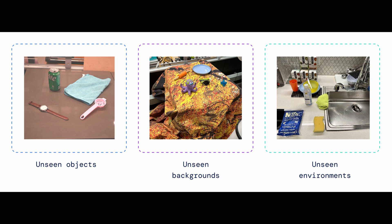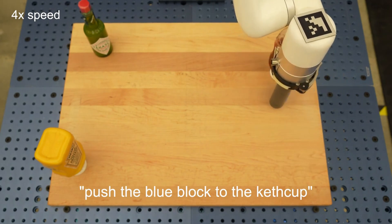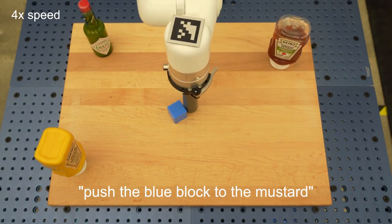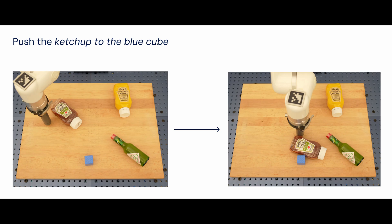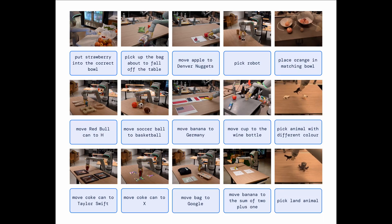Across all categories, we observed increased generalization performance — more than 3x improvement — compared to previous baselines such as RT-1 models and Visual Cortex (VC-1), which were pre-trained on large visual datasets. We also performed quantitative evaluations beginning with the original RT-1 tasks, continuing with varying degrees of previously unseen objects, backgrounds, and environments. RT-2 retained performance on original tasks and improved performance on previously unseen scenarios from RT-1's 32% to 62%, showing the considerable benefit of large-scale pre-training. Additionally, we observed significant improvements over baselines pre-trained on visual-only tasks, such as VC-1 and R3M, and algorithms that use VLMs for object identification, such as Manipulation of Open-World Objects (MOO).